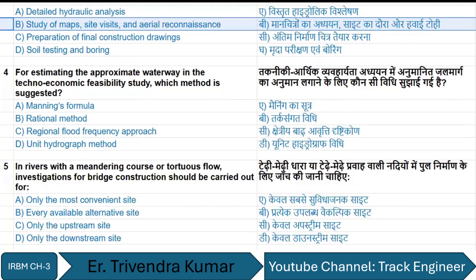Question number four: for estimating the approximate water bay in the techno-economic feasibility study, which method is suggested? The options include Manning formula, rational formula, regional flood frequency approaches, and unit hydrograph method. The right answer is regional flood frequency approaches.